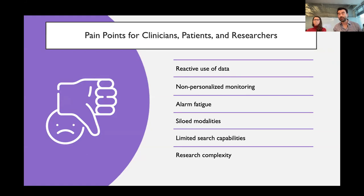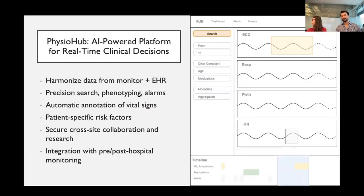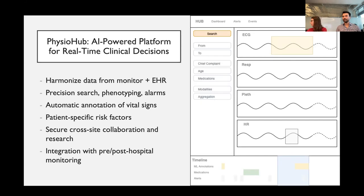At this point I want to introduce my collaborator Julia Reisler, who's going to be talking about some of our ongoing work to try to solve some of these problems. To address a lot of these pain points, we're building out a software called PhysioHub. The goal of PhysioHub is to empower physicians in the emergency department and ICU to practice more personalized care — meaning being able to effectively use data that spans multiple modalities and connect both short-term and long-term dependencies of this data.